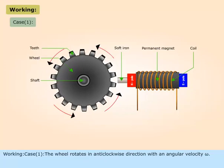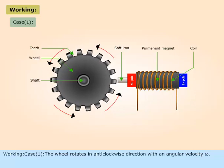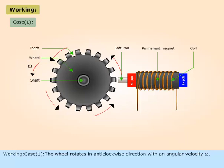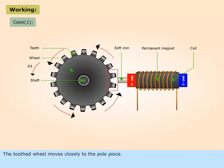Working - Case 1: The wheel rotates in anti-clockwise direction with an angular velocity omega. The toothed wheel moves closely to the pole piece.